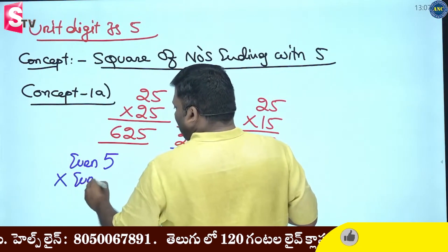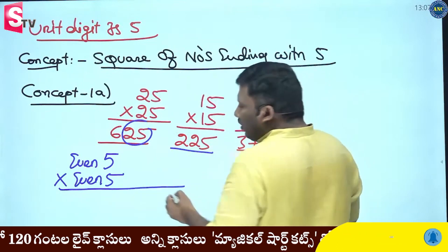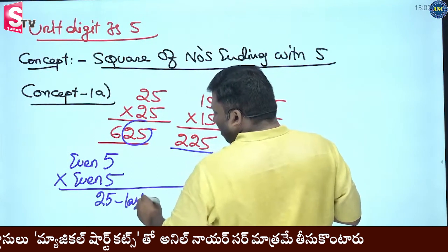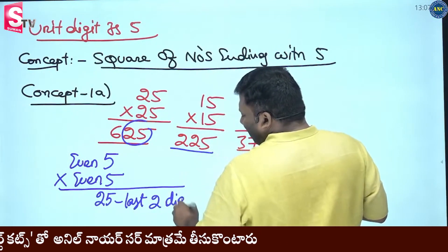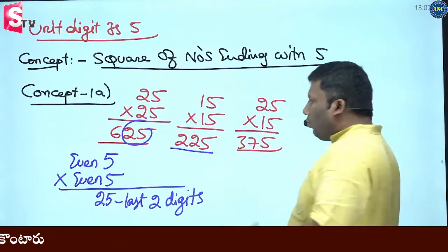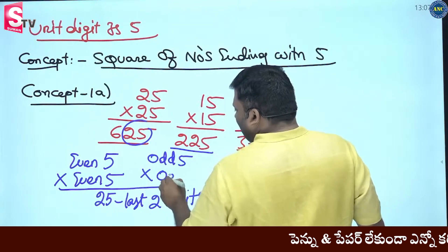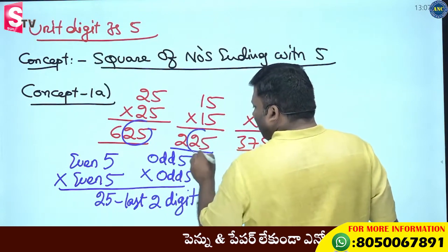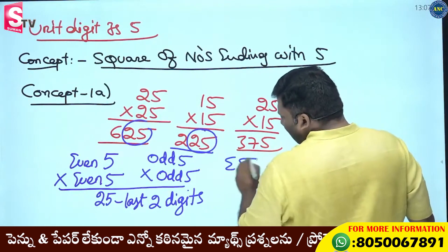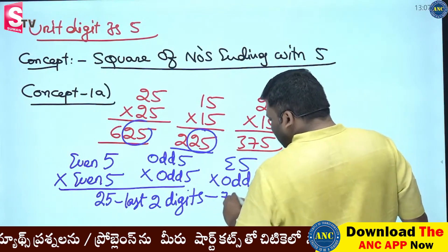When you multiply any number ending with 5, the last 2 digits depend on whether the numbers are even or odd. Even number ending with 5 into even number ending with 5: last two digits are 25. Even number ending with 5 into odd number ending with 5: last two digits are 75.